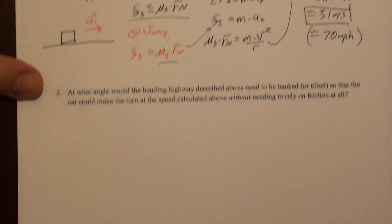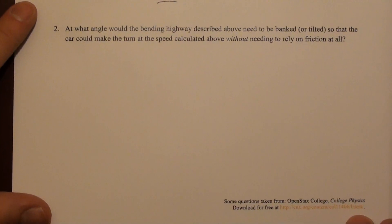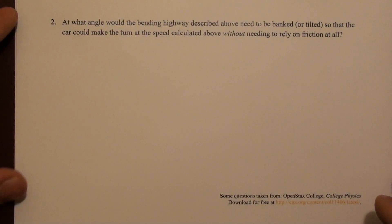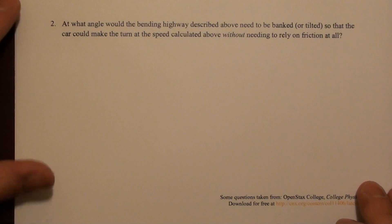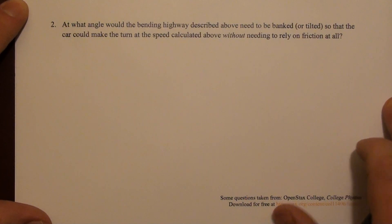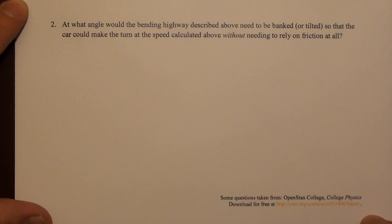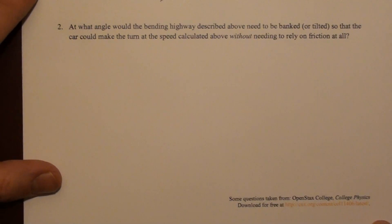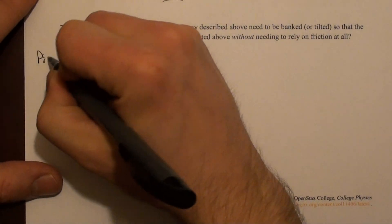The second problem is related to this. It says at what angle would the bending highway described above need to be banked or tilted so that the car could make this turn at the speed calculated above without friction? Let's try to imagine what that means.